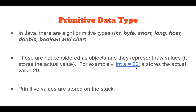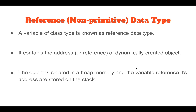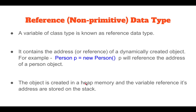Next, what is a reference or non-primitive data type? In simple words, a variable of class type is known as a reference data type. These data types are not defined by the programming language — they are defined by the programmers. It contains the address or reference of a dynamically created object. For example, the variable P is of person type and person represents a class.